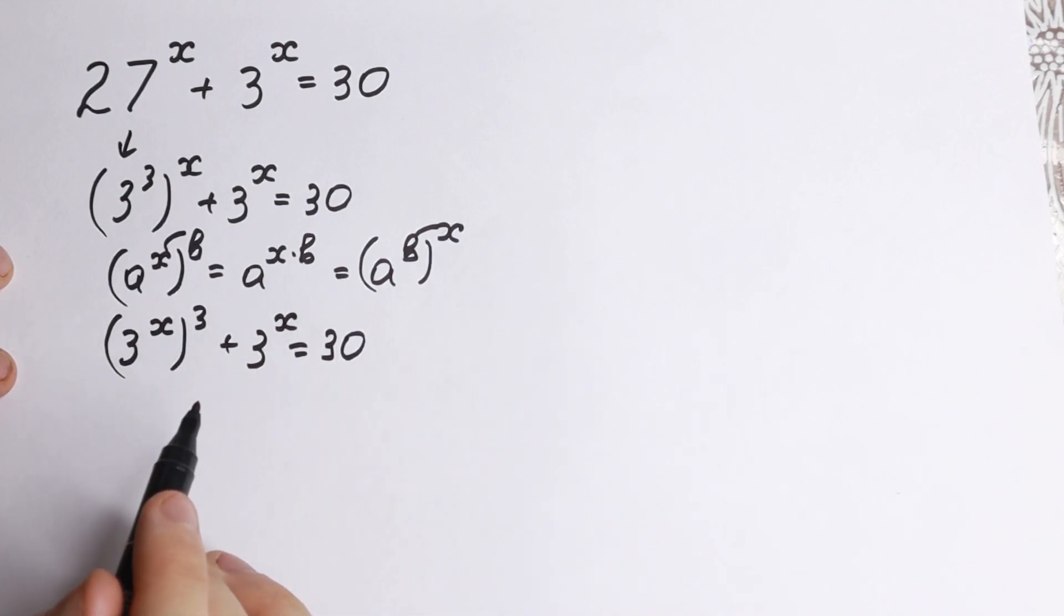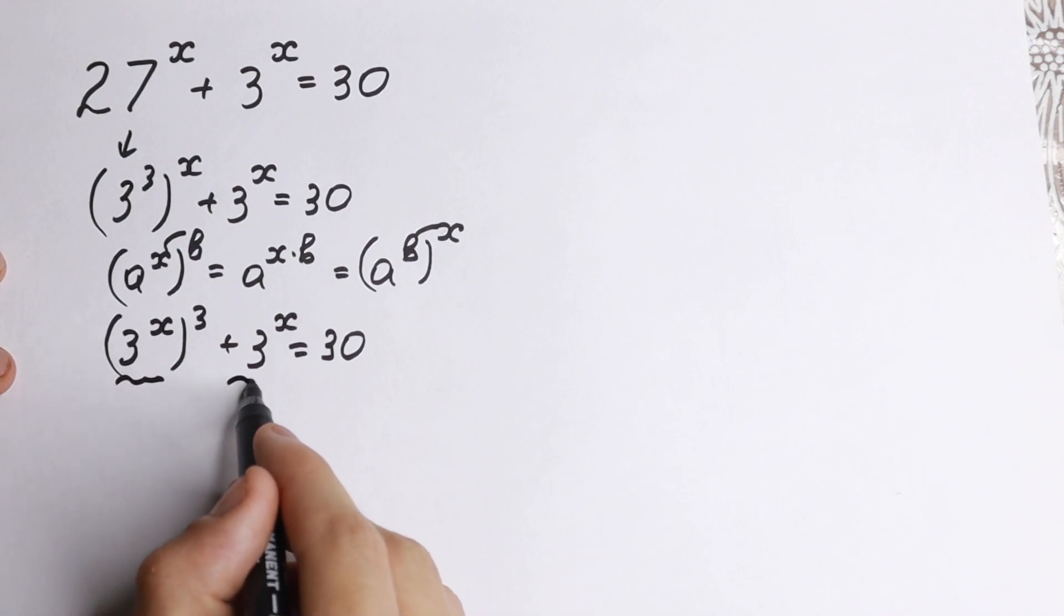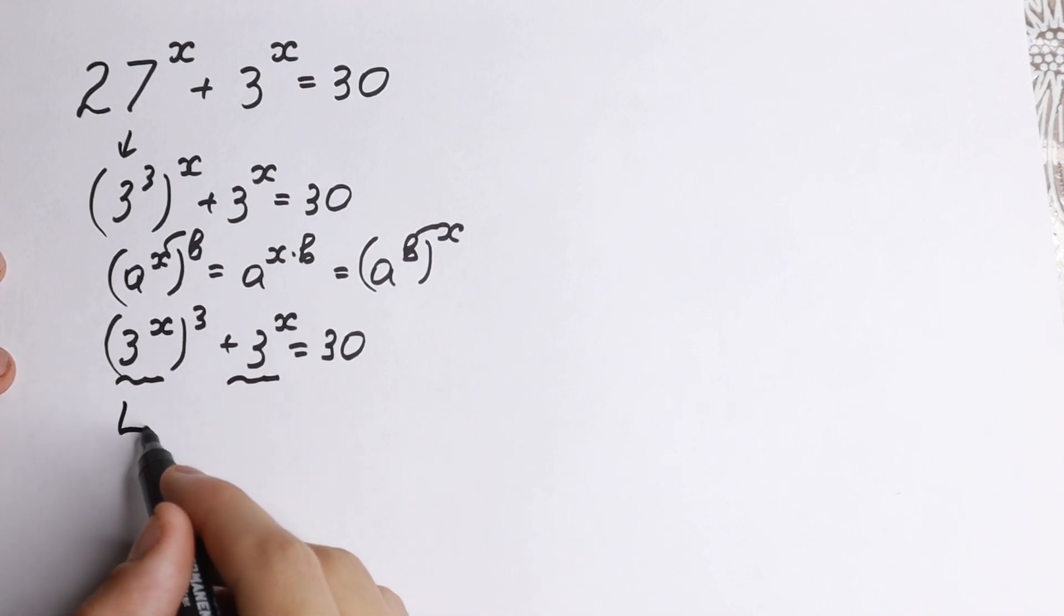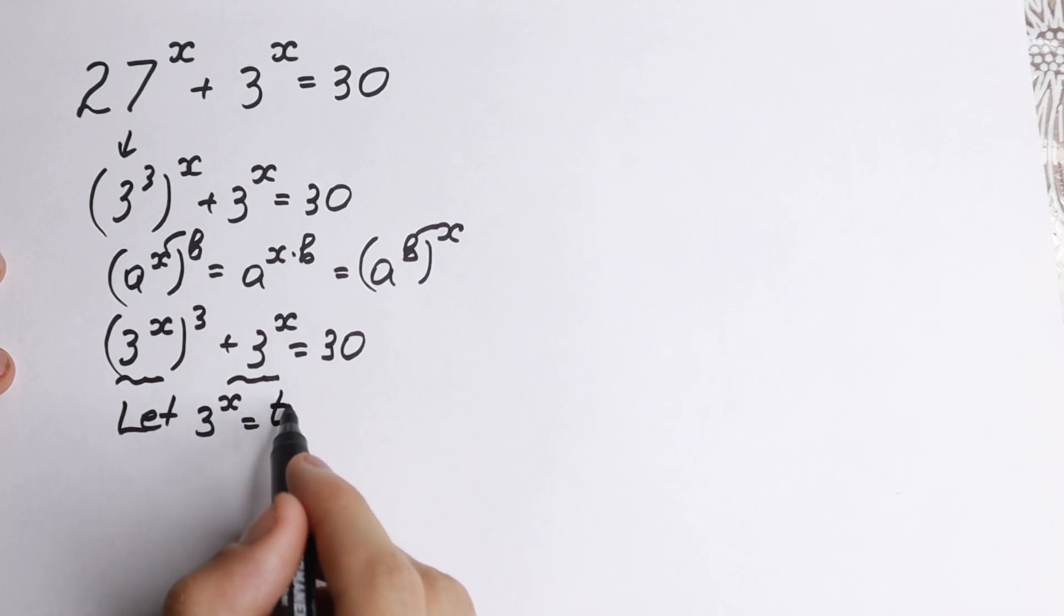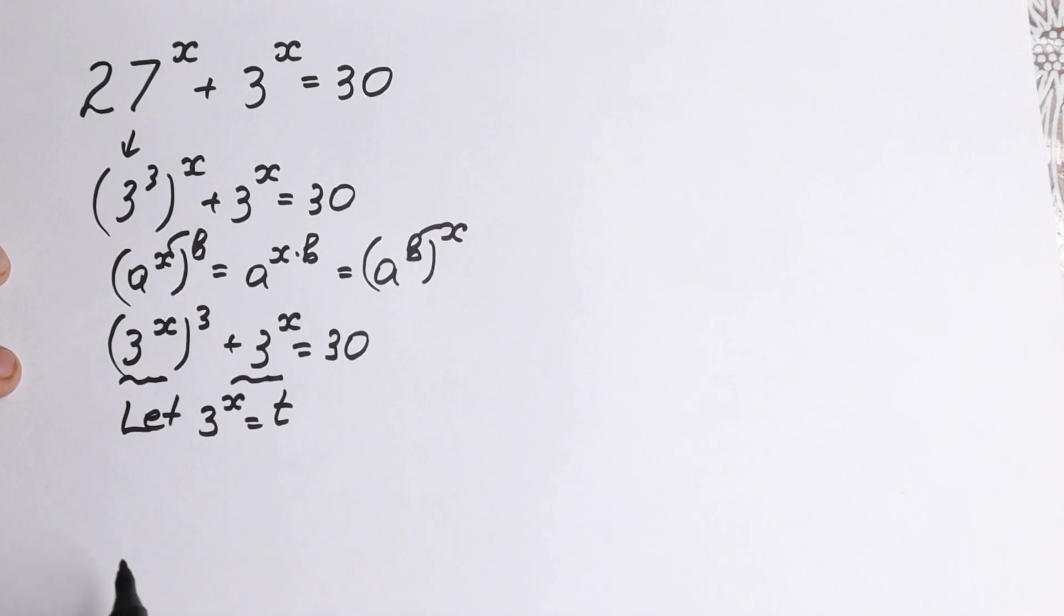So we have this equation. Right now it's good to see that here we have 3 to the x and here 3 to the x. So it's good to write a substitution. Let 3 to the x equal to, for example, t. What equation we will have as a result? We will have t cubed plus t minus 30 equal to 0.